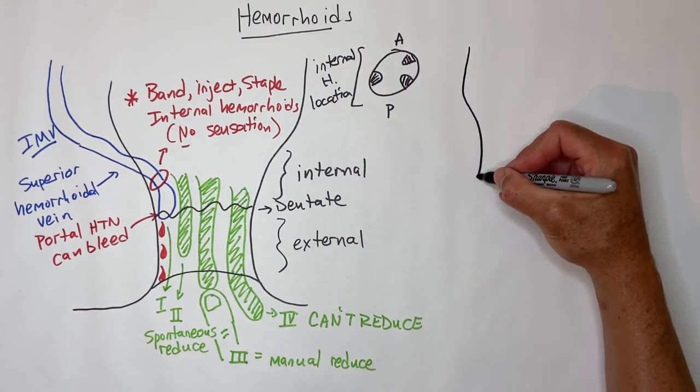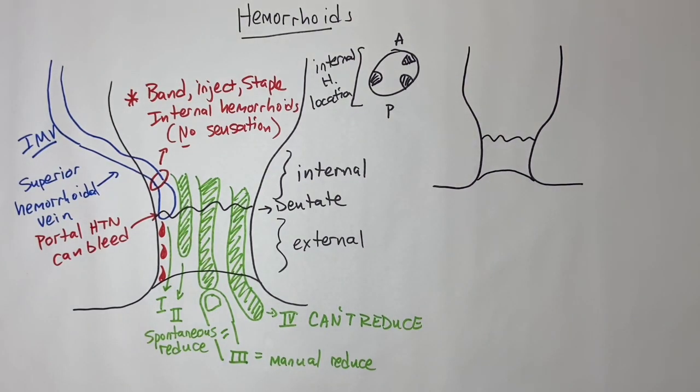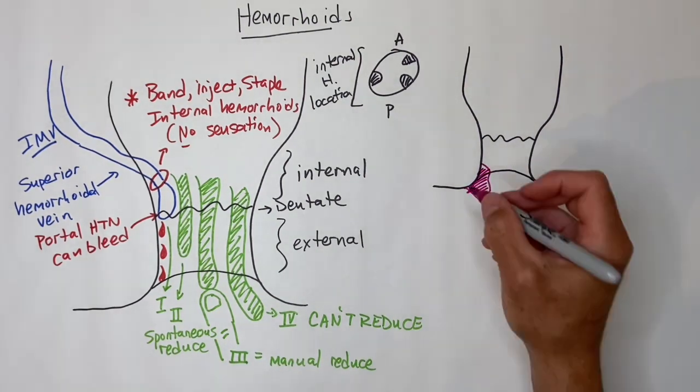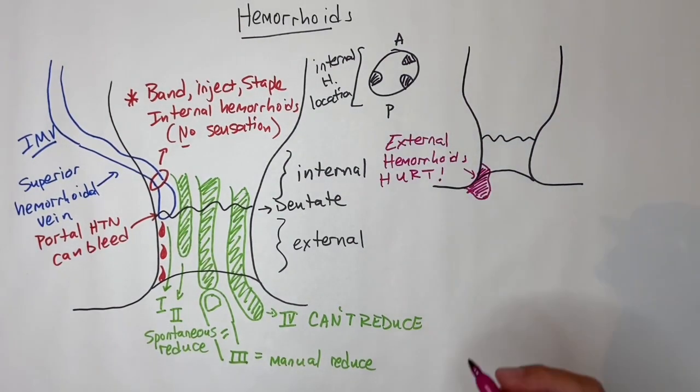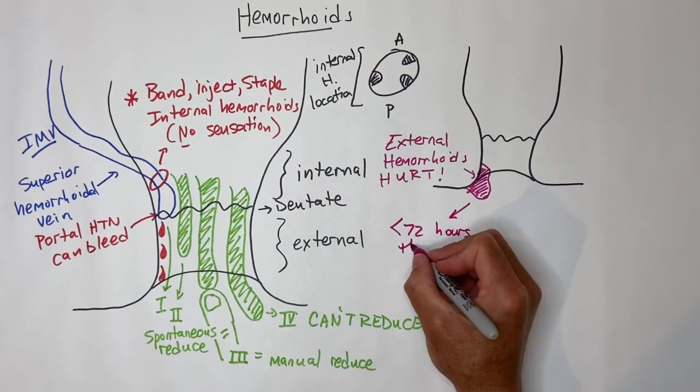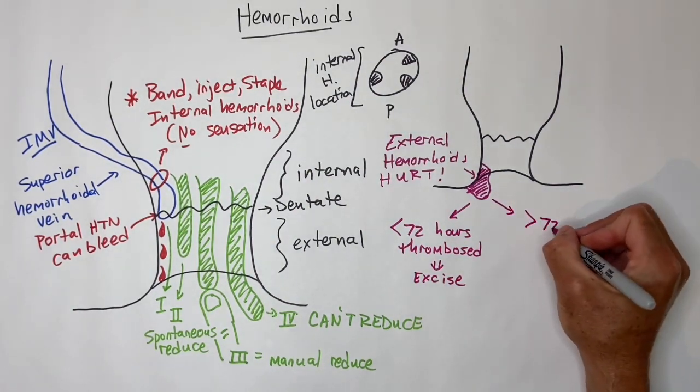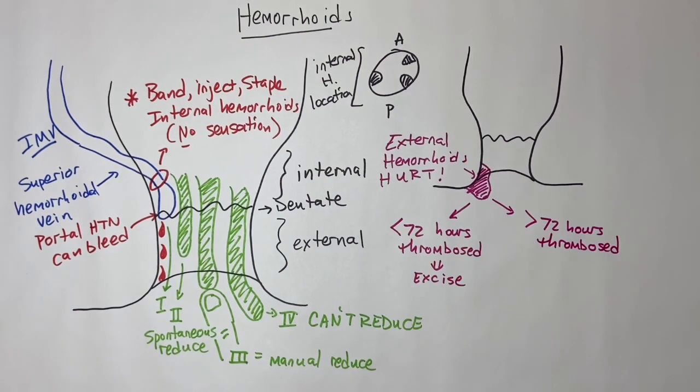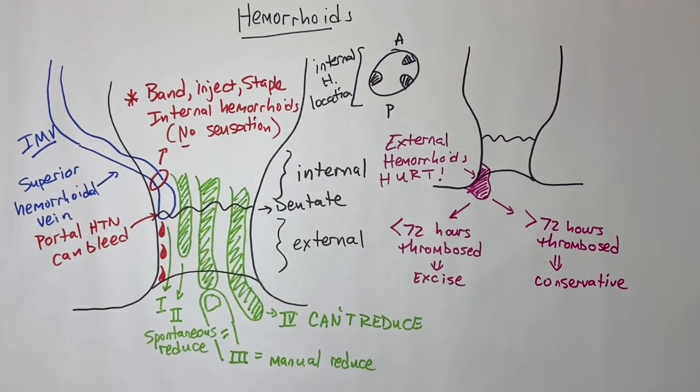External hemorrhoids hurt since there are somatic nerves below the dentate line. These are the hemorrhoids that get thrombosed and painful. If this is less than 72 hours old, you can do surgical excision. But if the patient presents after 72 hours, they're on the downslope of the curve of pain severity and should wait it out with stool softeners and sitz baths.